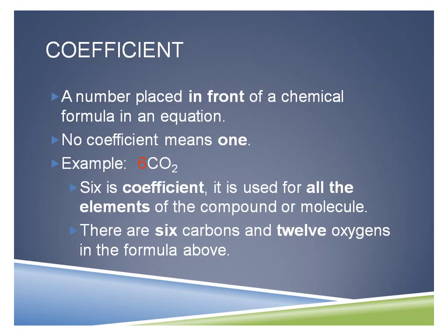Basically, I'm going to take the six and apply it to the carbon, and it's also going to get applied to the oxygen. So I've got six carbons, and I have 12 oxygens in this formula. The reason I have 12 is because originally I only had two oxygens, but now I have six of these molecules with two oxygens in each. So I multiply six times two and get 12.